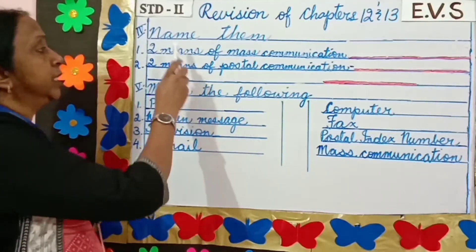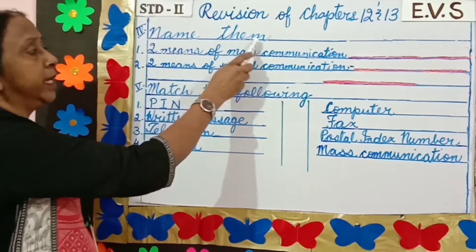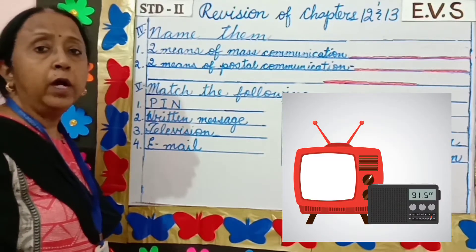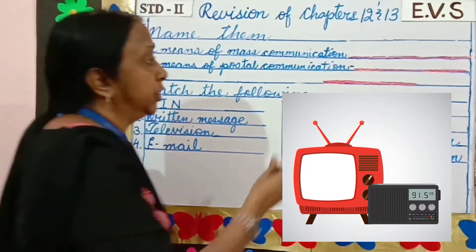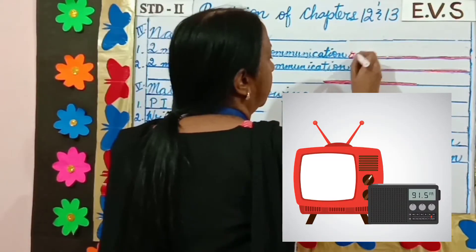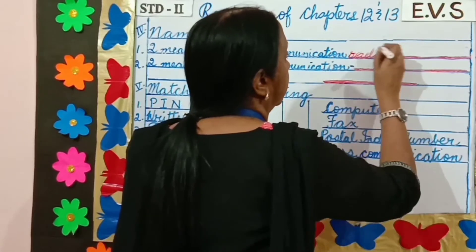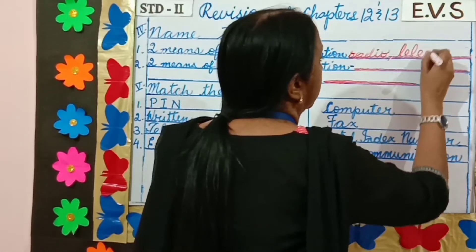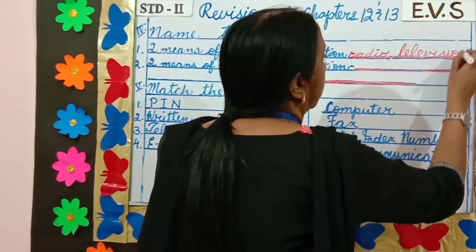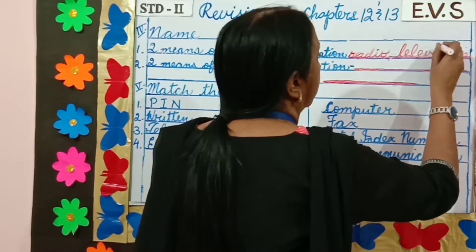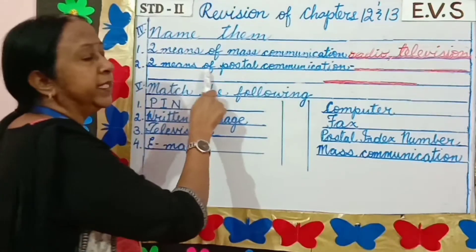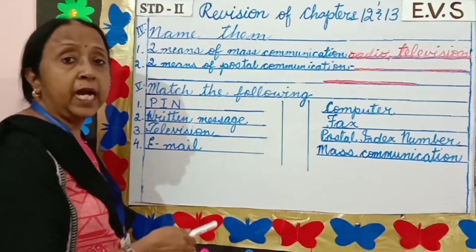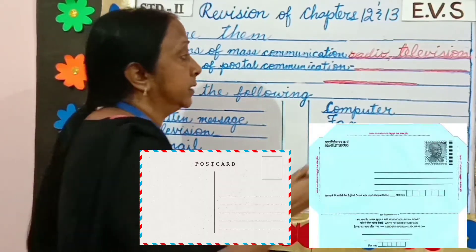Our next question is name them. Two means of mass communication: radio and television. Two means of postal communication: postcards and inland letters.